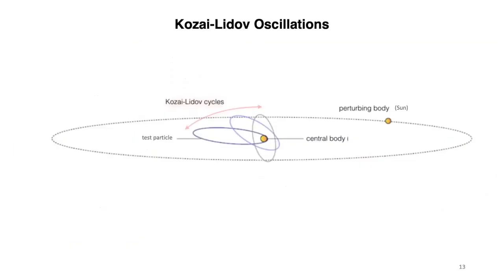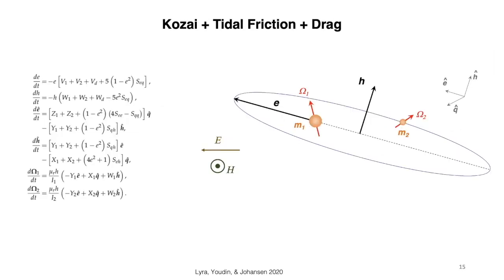So, Kozai-Lidov oscillations are oscillations that happen when you have bodies in an inclined orbit perturbed by a distant third body. In Kozai-Lidov oscillations, you are conserving the vertical component of the angular momentum, not the total angular momentum of the inner binary. And due to that, you can exchange eccentricity for inclination.